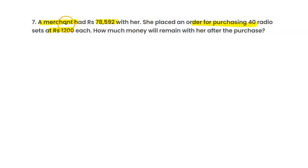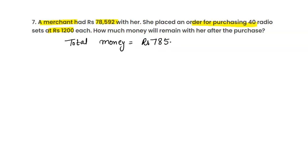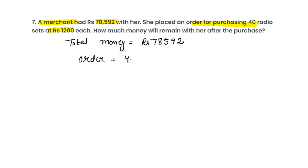First, the total money the merchant had is rupees 78,592. The order placed is for 40 radio sets, and each set costs rupees 1,200.